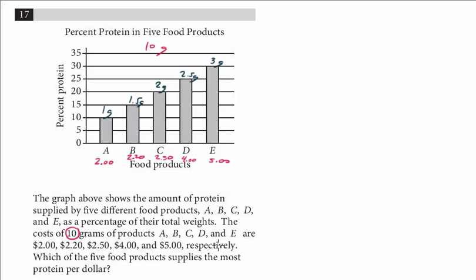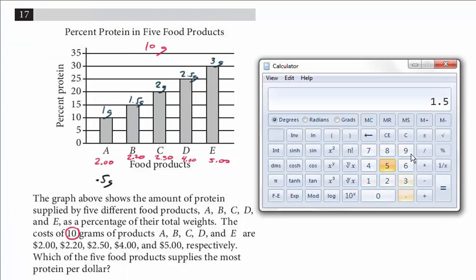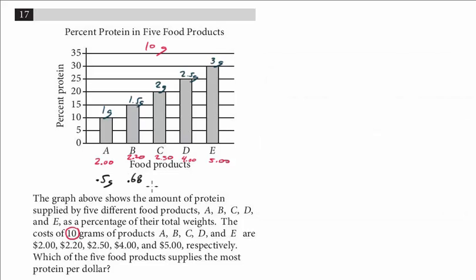We want to see which of these products supplies the most protein per dollar. Some of these you don't even need a calculator. For example, with A, we know that it's 1 gram for $2, so this is going to provide 0.5 grams per dollar. For B, we probably need our calculator. This is 1.5 divided by 2.2. This one has the most so far, 0.68 grams per dollar.